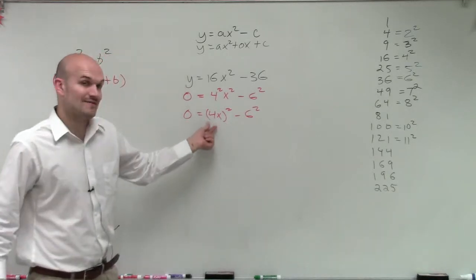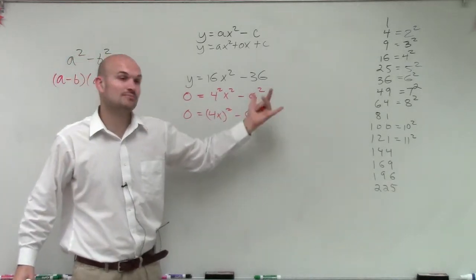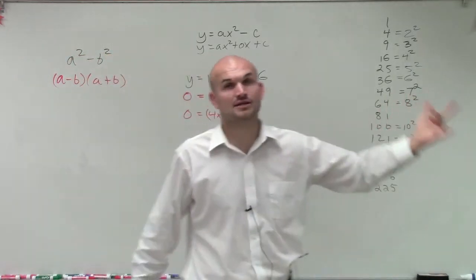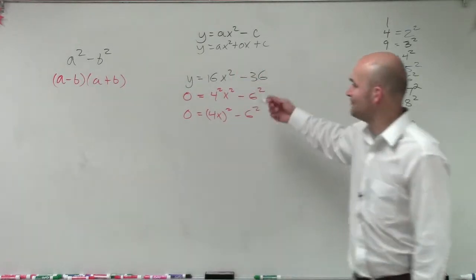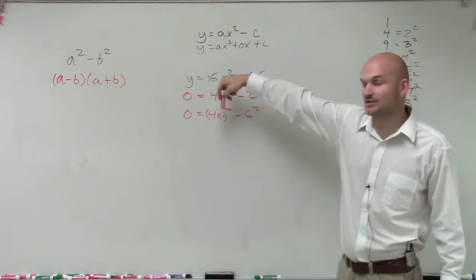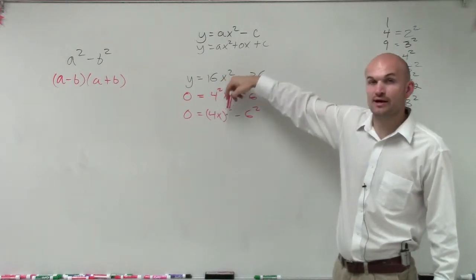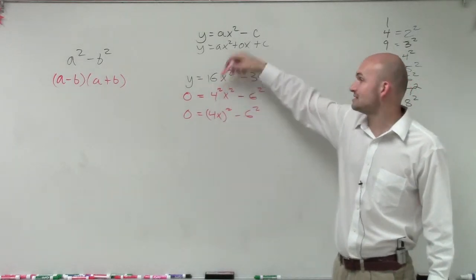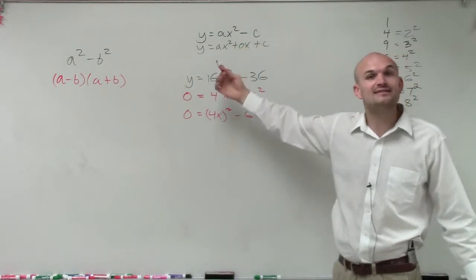Now, I have a term squared minus another term squared. And if you're not understanding this rule, just think about, does this work? Does 4x squared, so 4x times 4x, does that give you 16x squared? And yes, it does. So it works.